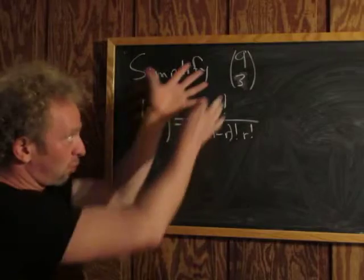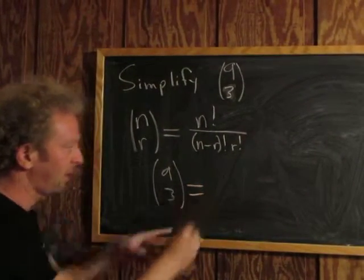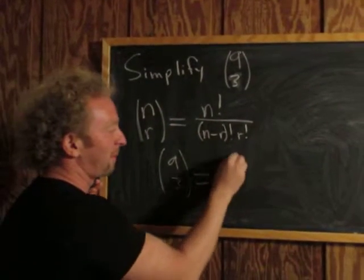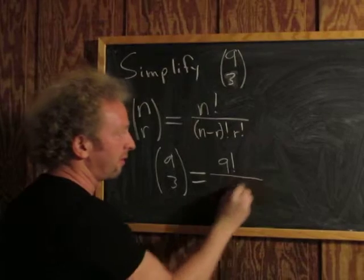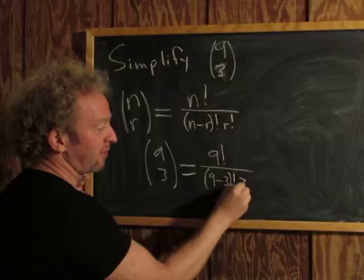All we have to do here is simplify it. 9 choose 3. So n is 9, which means this is 9 factorial over 9 minus 3 factorial times 3 factorial.